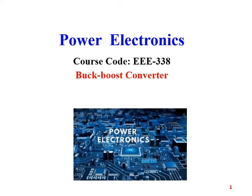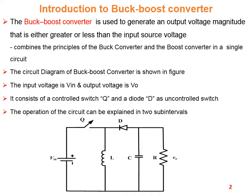Bismillahirrahmanirrahim. This is the fifth lecture on DC to DC converters. The topic is the buck-boost converter — an introduction to the buck-boost converter. This converter is used to generate an output voltage magnitude that is either greater than or less than the input source voltage. This converter actually combines the principle of the buck converter and the boost converter in a single circuit.